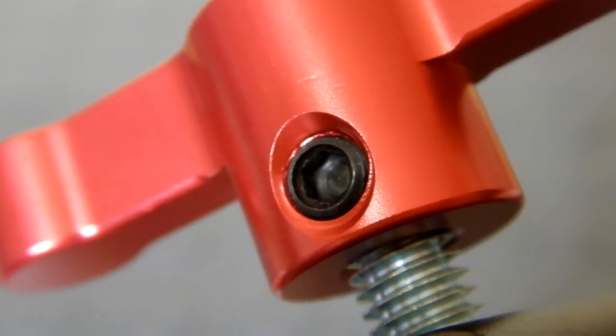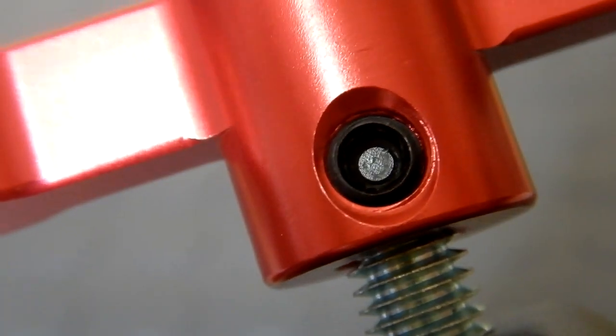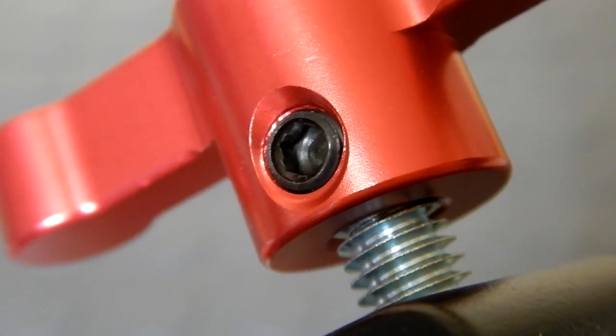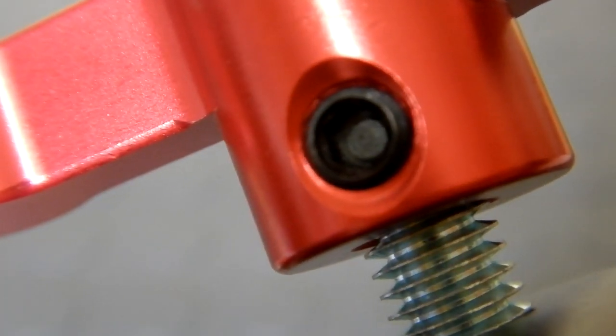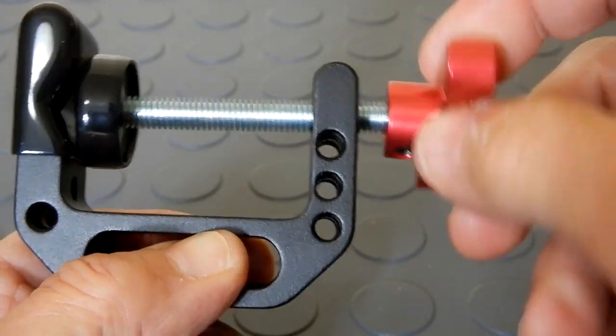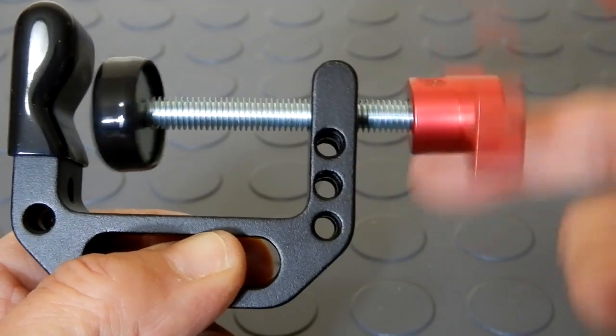If for some reason it would require to be tightened down a little bit you'll need a 3 millimeter Allen wrench. And the threaded action is very smooth.